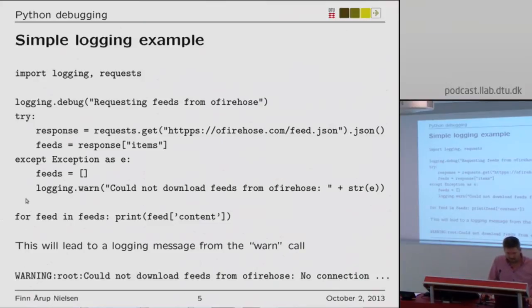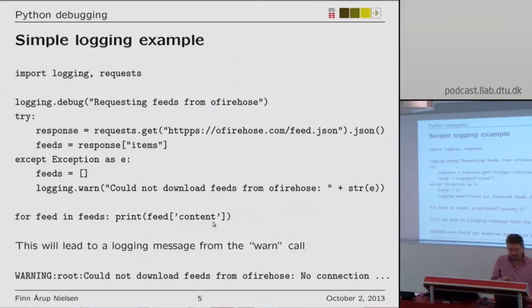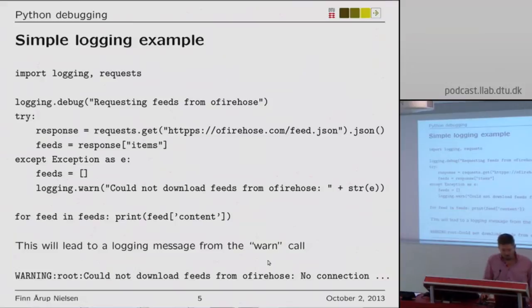Then we print out what's in particular fields in each item — the content, which is the text of this micro-blogging service aggregated in the firehose. The result in this case is output to standard output — a warning message — displayed in this way here.